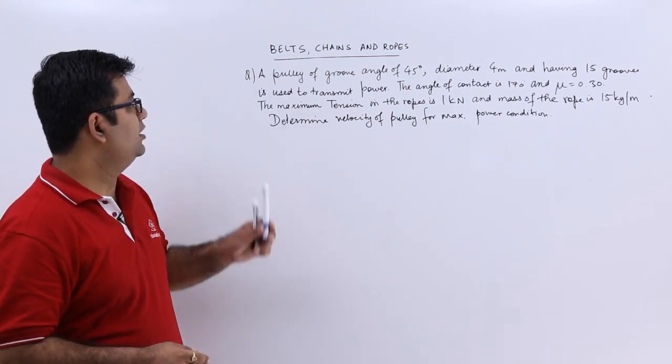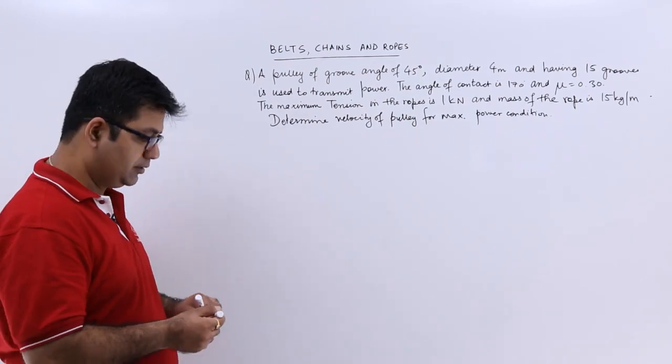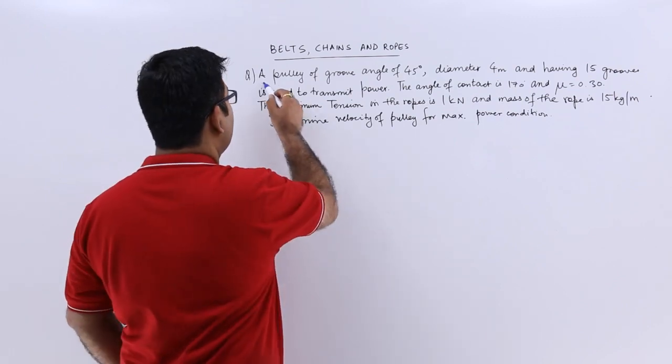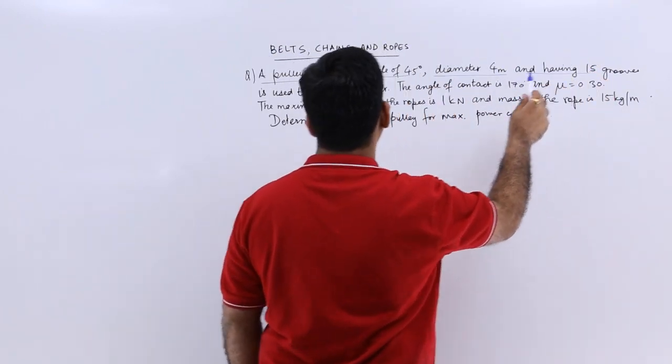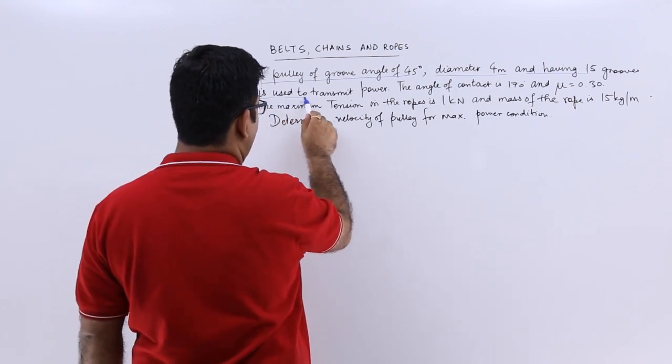Now let's look at a numerical on rope drive. The question says, a pulley of groove angle 45 degrees, dia 4 meters and having 15 grooves is used to transmit power.